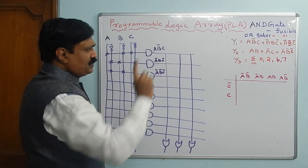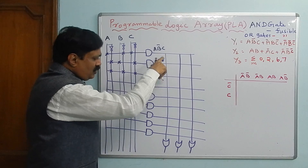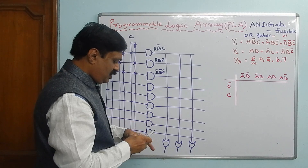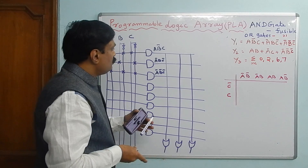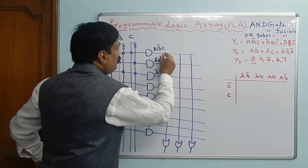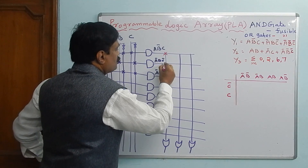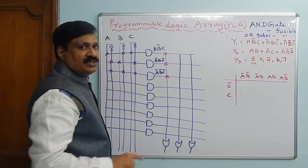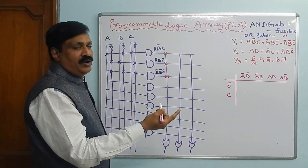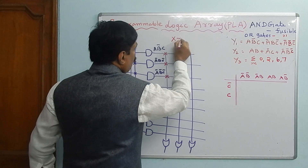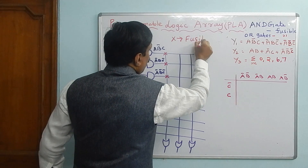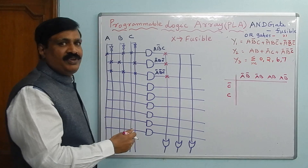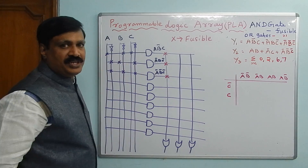For the first equation you can connect here. Previously I made a fixed dot; here I make a cross, which means it is fusible. Cross means fusible; fixed means dot. But here we are not using fixed connections, so I am not mentioning them.